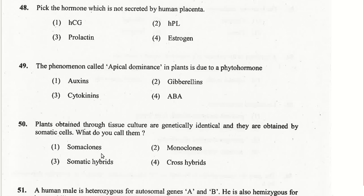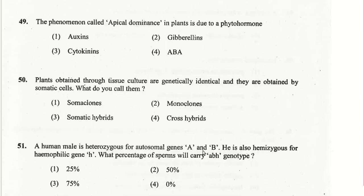A human male heterozygous for autosomal genes A and B who is also hemizygous for the hemophilic gene H — what percentage of sperms carry the ABH genotype? The question was found to be incorrect, so grace marks were provided for question 51.